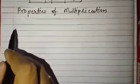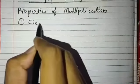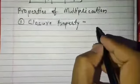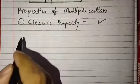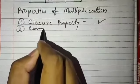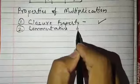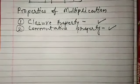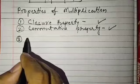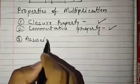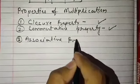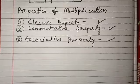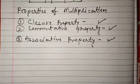The next topic is the properties of multiplication. The first property is the closure property — multiplication of integers follows the closure property. The second is the commutative property — it also follows the commutative property. The third is the associative property — multiplication also follows the associative property. All three of these properties were already discussed in yesterday's class.